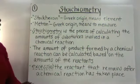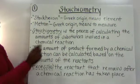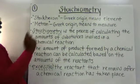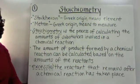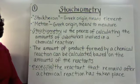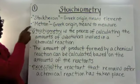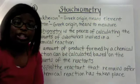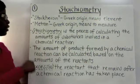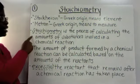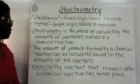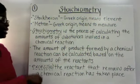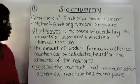Let's start with what does stoichiometry actually mean? Stoikhion is the Greek origin of the word that means element. Metrion is the Greek origin of the word that means to measure. So with stoichiometry, you're going to be measuring elements. Stoichiometry itself is the process of calculating the amounts of substances involved in a chemical reaction.